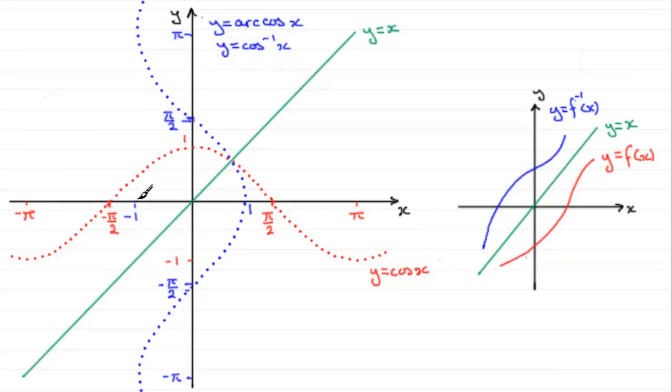So what we have is that the domain of arc cos x goes between minus 1 and 1.